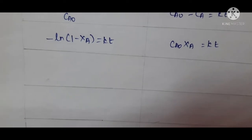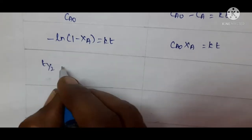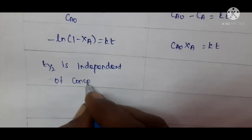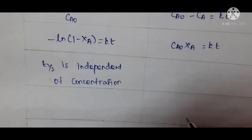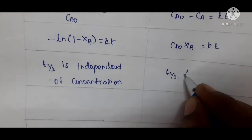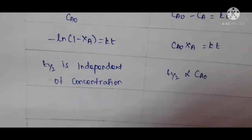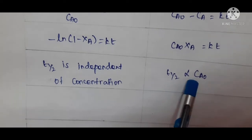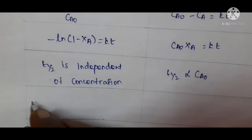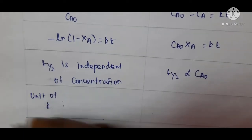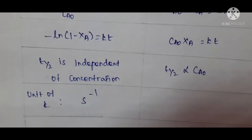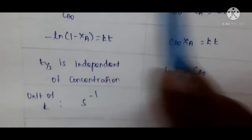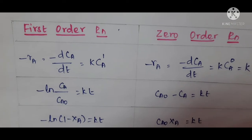Next is half-life. For first order reaction, the half-life is independent of concentration. For zeroth order, the half-life is directly proportional to the initial concentration. That is the key difference. Then, regarding the unit of k: for first order, the unit of k is second inverse. For zeroth order, it is mole per liter per second. You should know all these things to solve the problems.